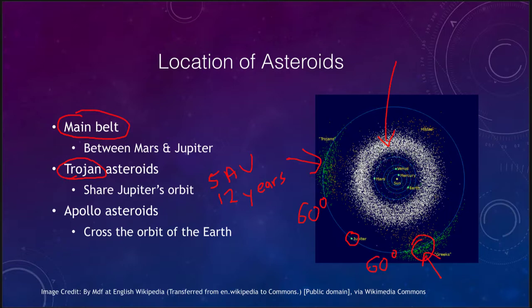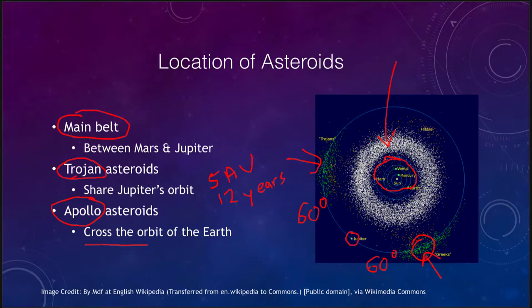Finally, there are the Apollo asteroids. Apollo asteroids are those that cross the orbit of the Earth. While the vast majority of asteroids are out near Jupiter or between Mars and Jupiter, there are a few in the inner part of the solar system. Anything that crosses the orbit of the Earth is an Apollo asteroid, and those are the ones we would actually have to watch out for — they have the potential to impact us here on Earth.